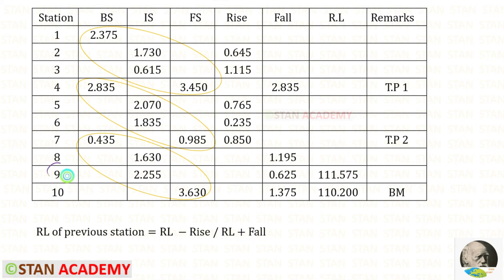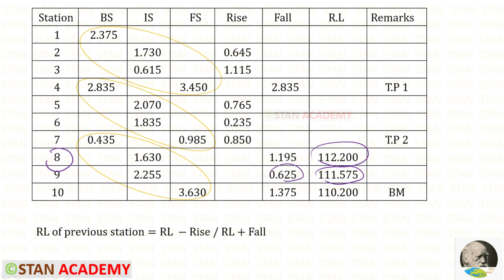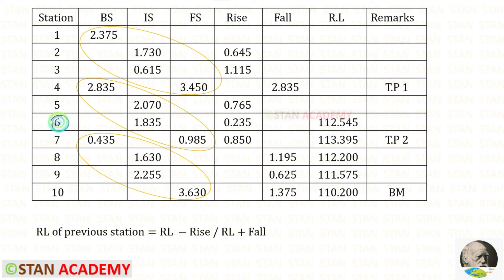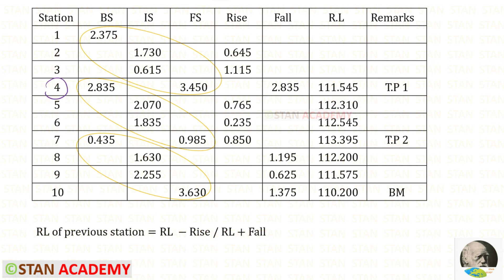Let us find the reduced level of station 9. At station 10 we have fall, so we add to get the reduced level of station 9. For station 8, at station 9 we have fall, so we add to get the reduced level of station 8. For station 7, we again have fall, so we add. For station 6, we have rise, so we subtract to get station 6's reduced level. For station 5, we have rise again, so we subtract. For station 4, we also have rise, so we subtract to get station 4's reduced level.